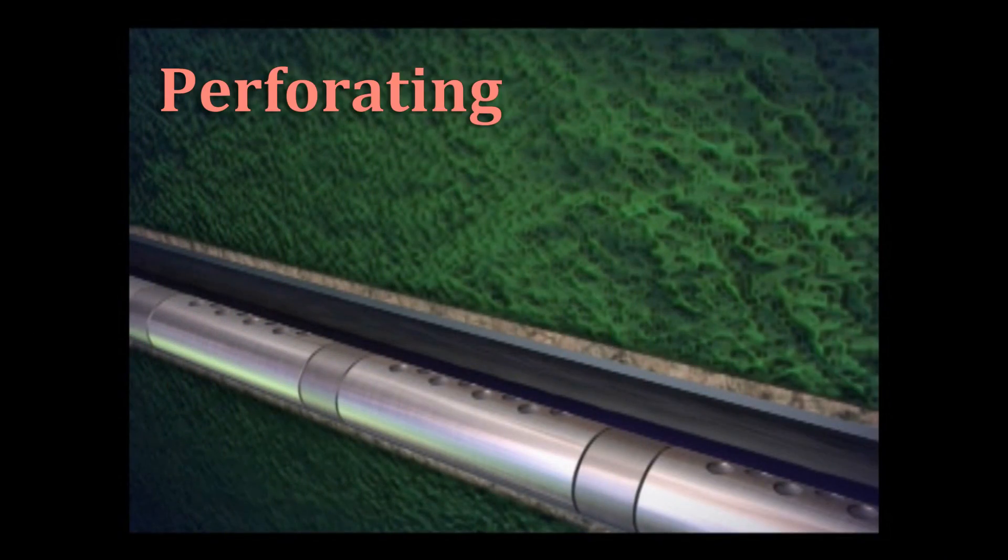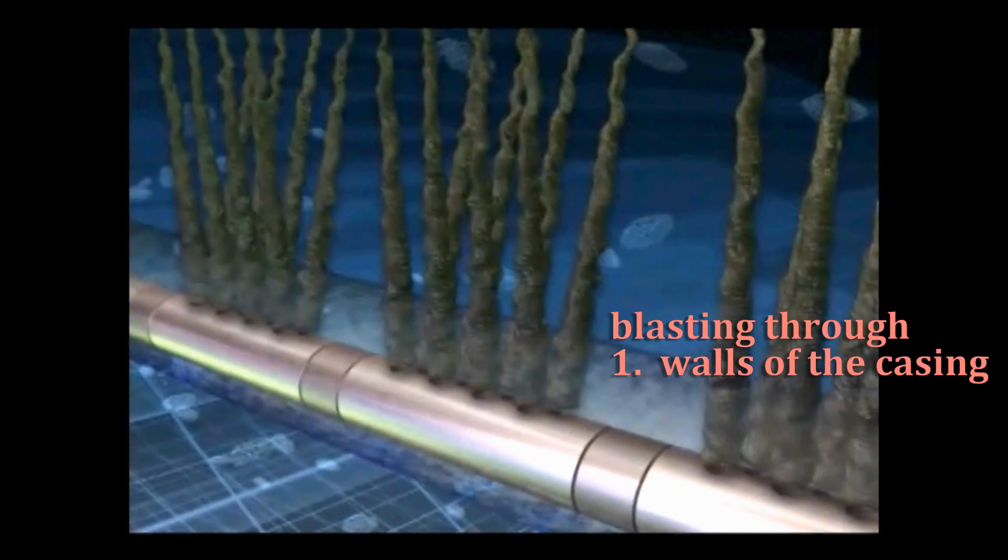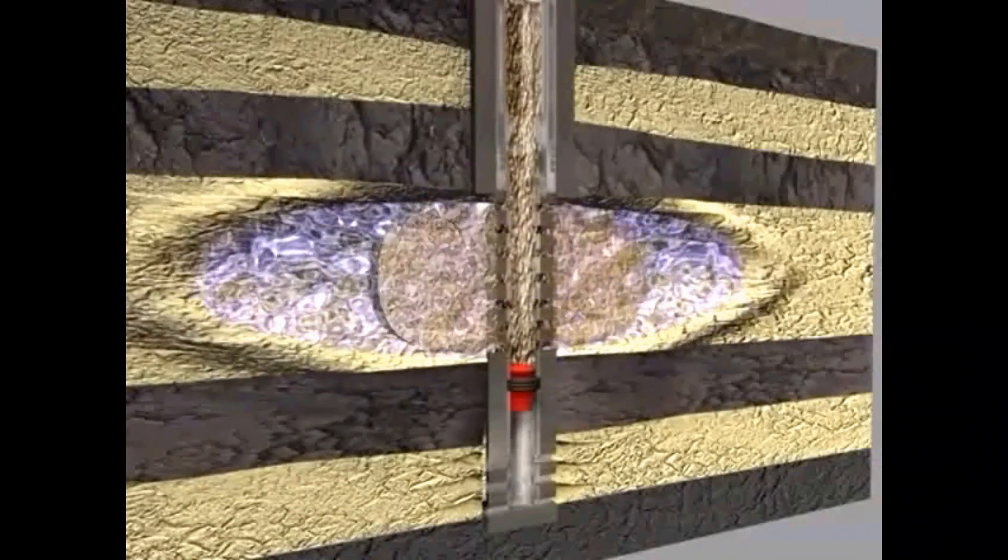With the cemented casing in place, the next task is to perforate the casing in the zone of interest, now called the pay zone. Perforating means that the holes are blasting through the walls of the casing, the cement sheath, and continuing on for about 1 meter into the formation rock. It is through these holes that hydrocarbon fluids will pass to the surface when production begins.